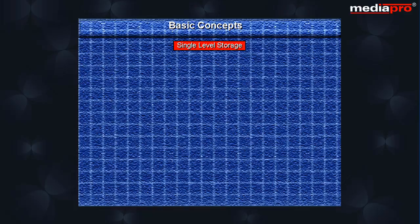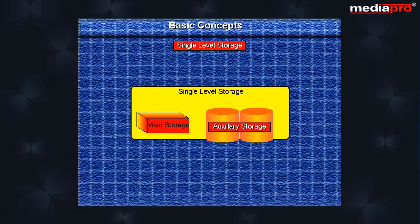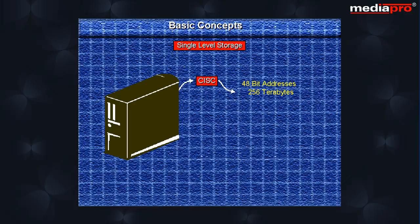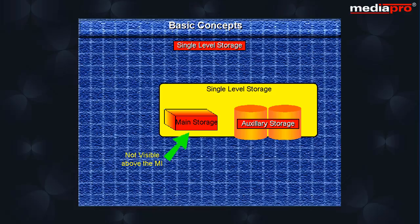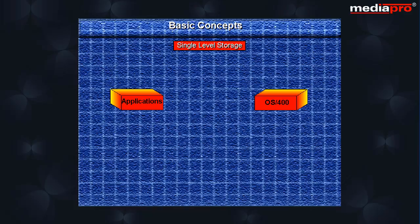Single-level storage: All the storage on the AS400 is treated as one large address space. On CISC machines, we have 48-bit addresses and an address space of 256 TB. On RISC machines, we have 64-bit addresses and an address space of 18,44,670 TB. The single-level storage is not visible above the machine interface. Both applications as well as OS400 reference the objects by name only.